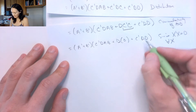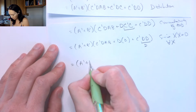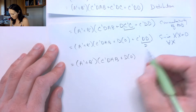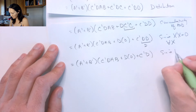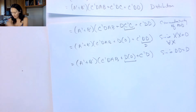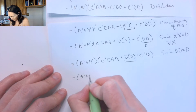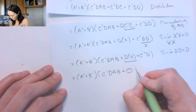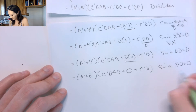The next thing I see is D ANDed with itself. D ANDed with itself is just D, so I can simplify that: Ā OR B̄, ANDed with C̄D·AB, or D ANDed with zero — or C̄·D. This is since D·D = D. Then any time we AND something with zero, the result is zero, so I can get rid of that term altogether. This gives: Ā OR B̄, times the quantity C̄D·AB, or zero, or C̄D. Since anything ANDed with zero is zero for all X.